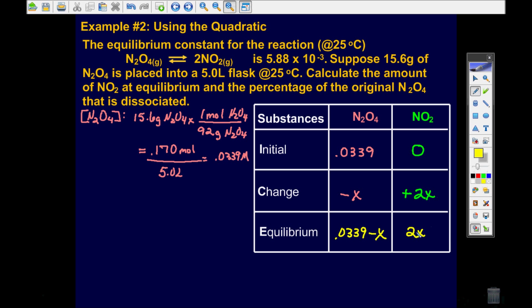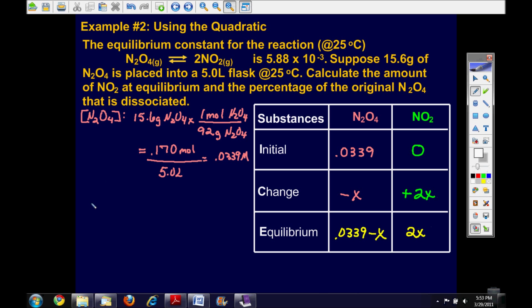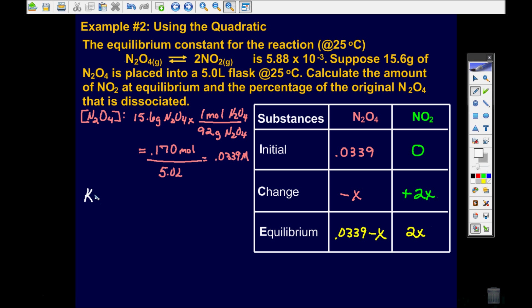Now that I have these values, I can plug them into the equilibrium expression. So let's go ahead and write the equilibrium expression. K is equal to NO2 squared from the coefficient, divided by the concentration of N2O4. And they told me that that is equal to 5.88 times 10 to the negative 3. That's the K value, and it comes from the problem. So now I'm just going to put my equilibrium concentrations in, right here.